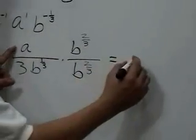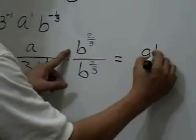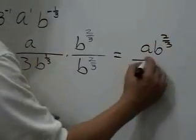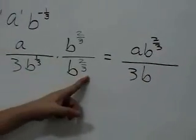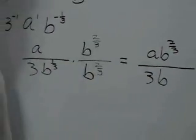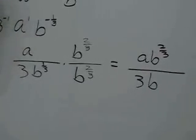Multiplying, we have a b to the 2 thirds over 3b, because b to the 1 third times b to the 2 thirds is b to the 3 over 3 or 1.